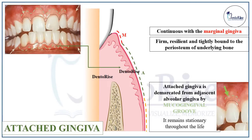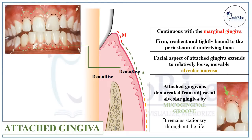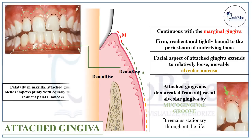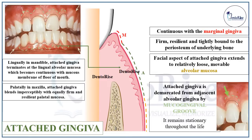The mucogingival groove remains stationary throughout life. Facially, the attached gingiva extends from the marginal gingiva or free gingival groove up to the loose movable alveolar mucosa. In the maxilla, it blends imperceptibly with the equally firm and resilient palatal mucosa lingually. In the mandible, the attached gingiva terminates at the lingual alveolar mucosa, which then becomes continuous with the mucous membrane of the floor of the mouth.